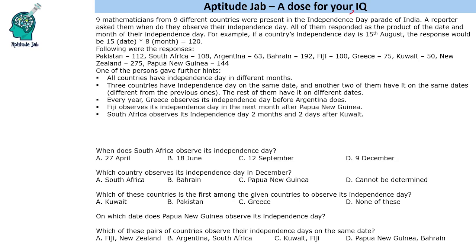So what do we mean by product of date and month? For example, if it is 15th of August, it will be 15 into 8 — date into month. So these are the responses given by the people.